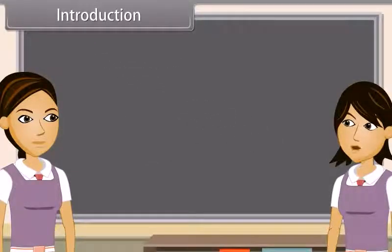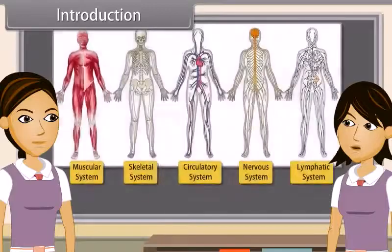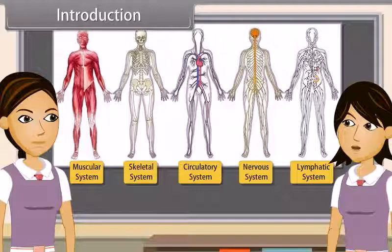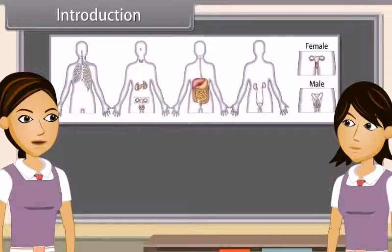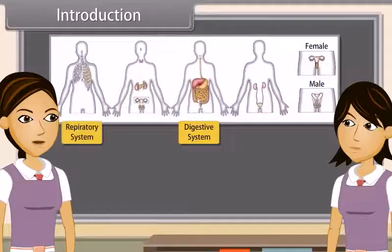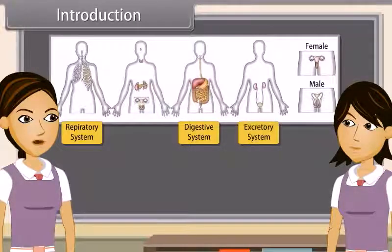As we already know, the body of higher animals like man is formed of a number of organ systems. Some of the examples are digestive system, respiratory system, circulatory system, excretory system, etc.